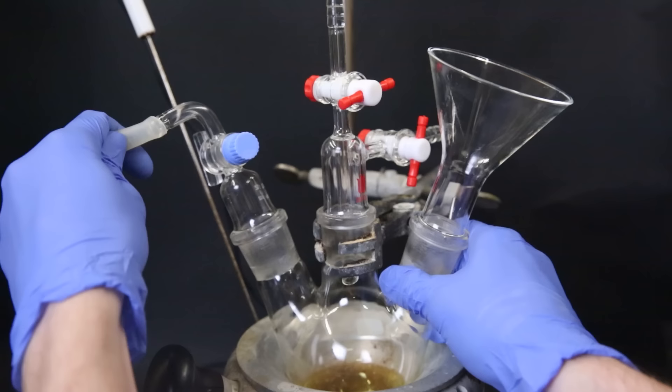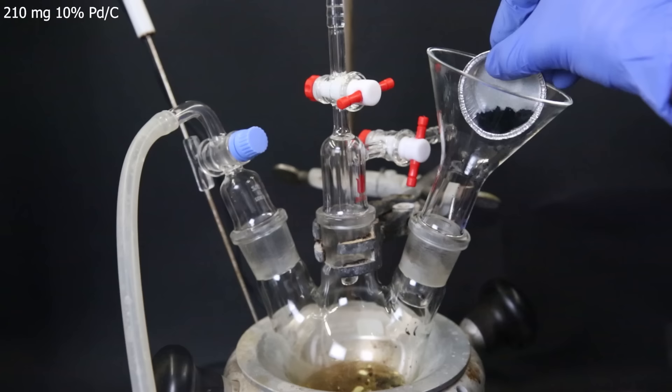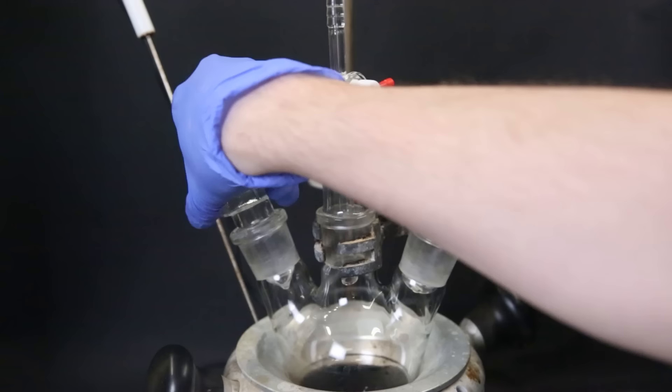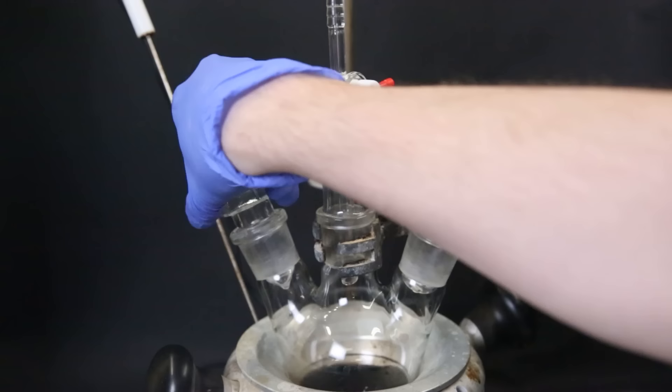I then attach an argon line and flush the flask with argon. Under argon flow, I add in 210 milligrams of 10% palladium on carbon, which will be the catalyst for this reaction. I then remove the funnel and replace it with a stopper. I also remove the gas adapter and also replace it with a stopper.